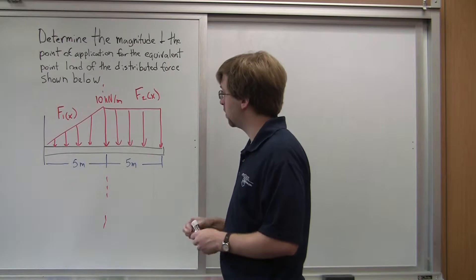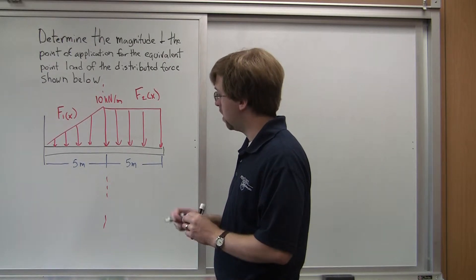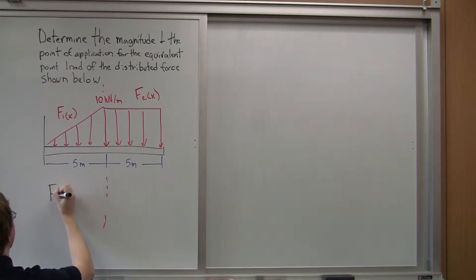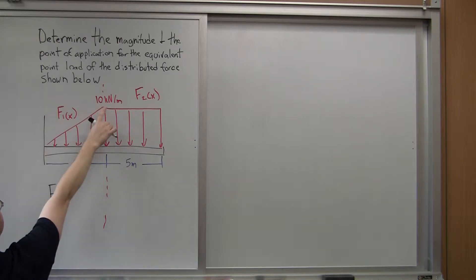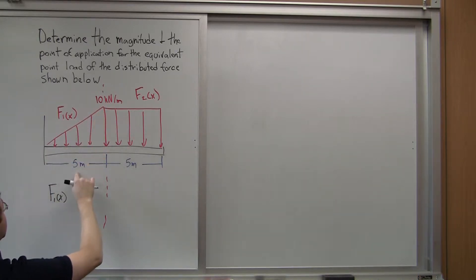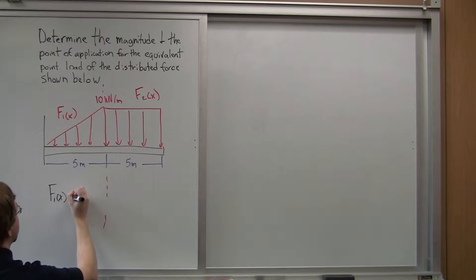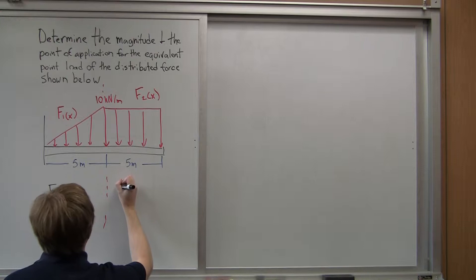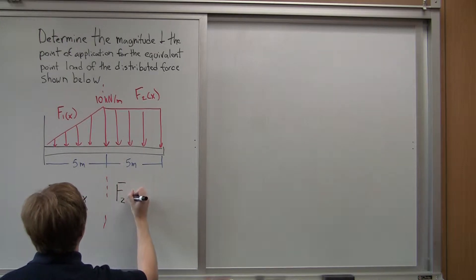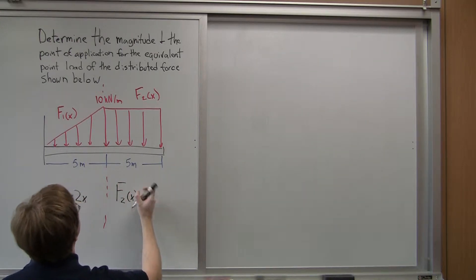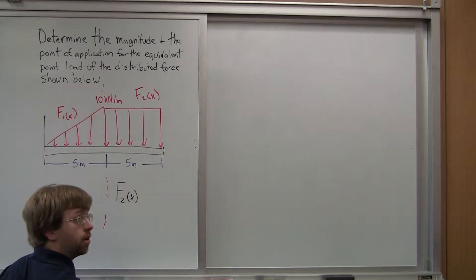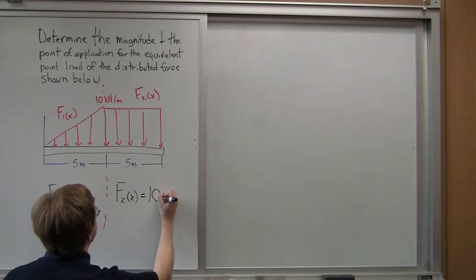If I look at the equations of these two lines: f1(x) is simply going to be a line. The rise is ten, the run is five, so it's a line with a slope of two — so 2x. And then f2(x) is a horizontal line at ten, so there's no x at all. This is just equal to ten.